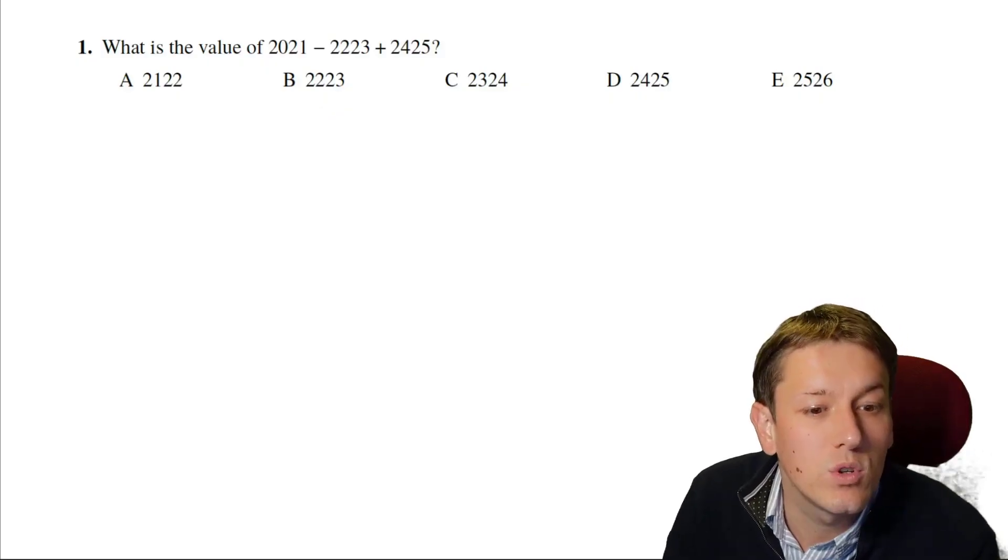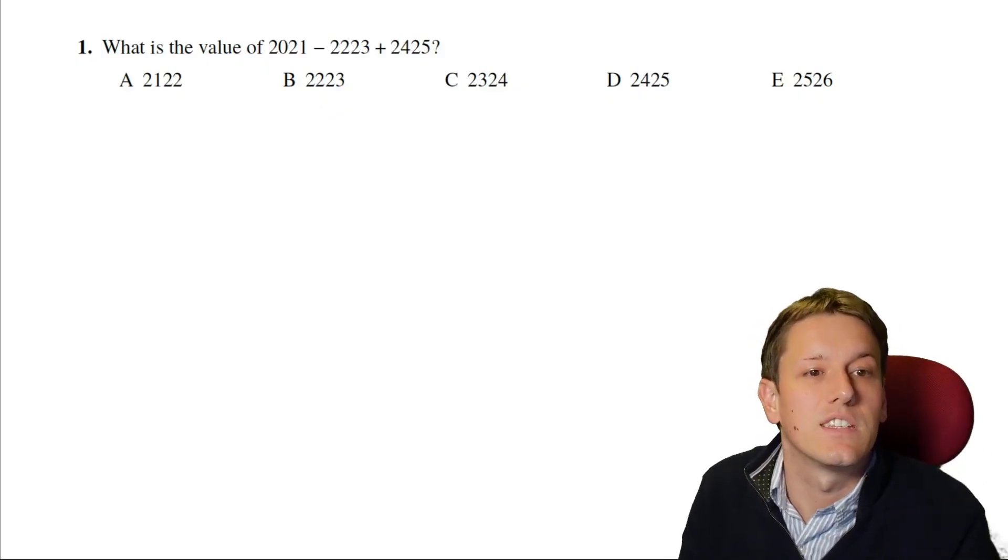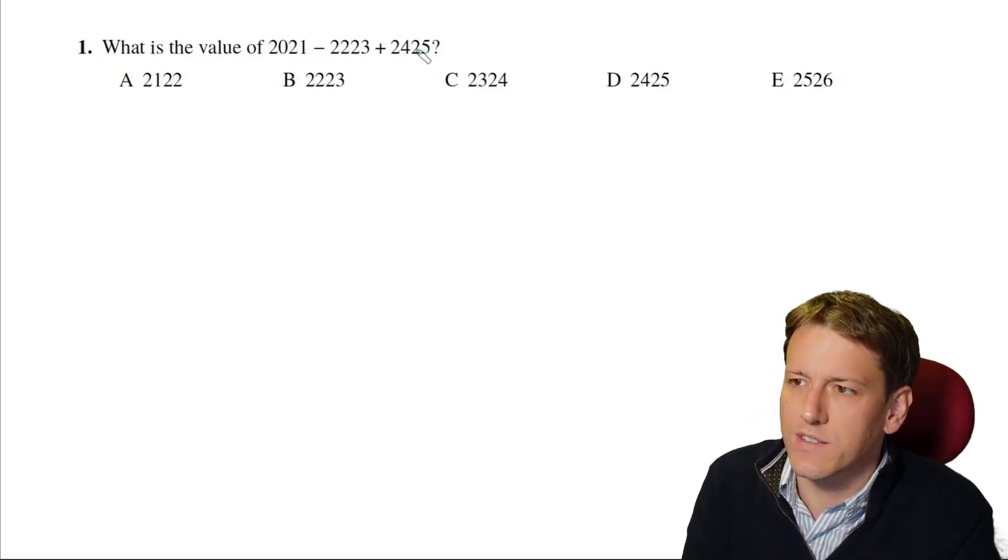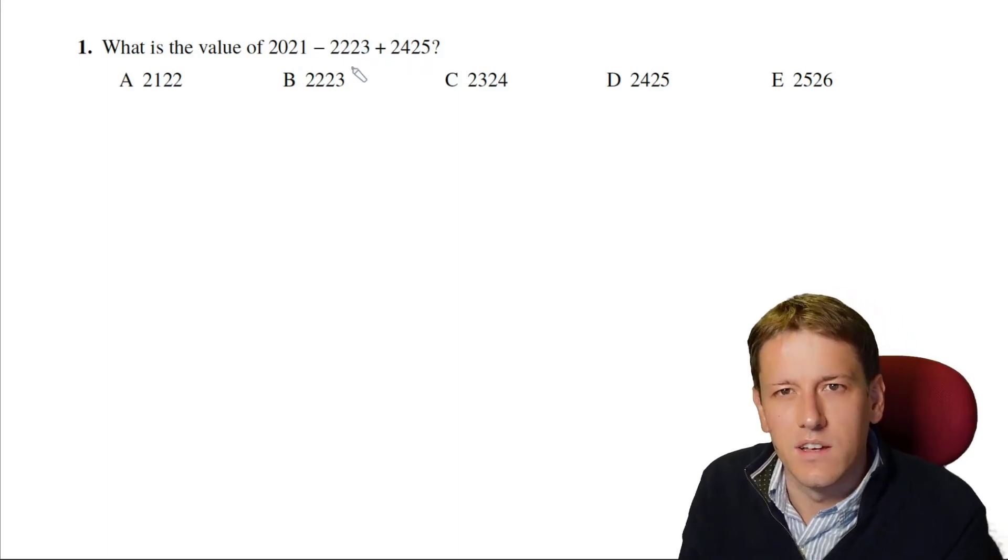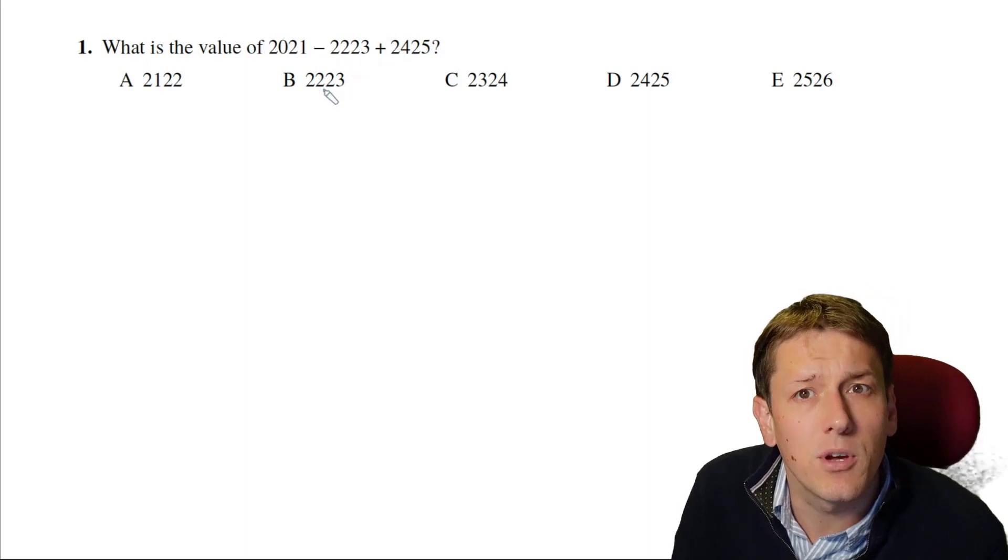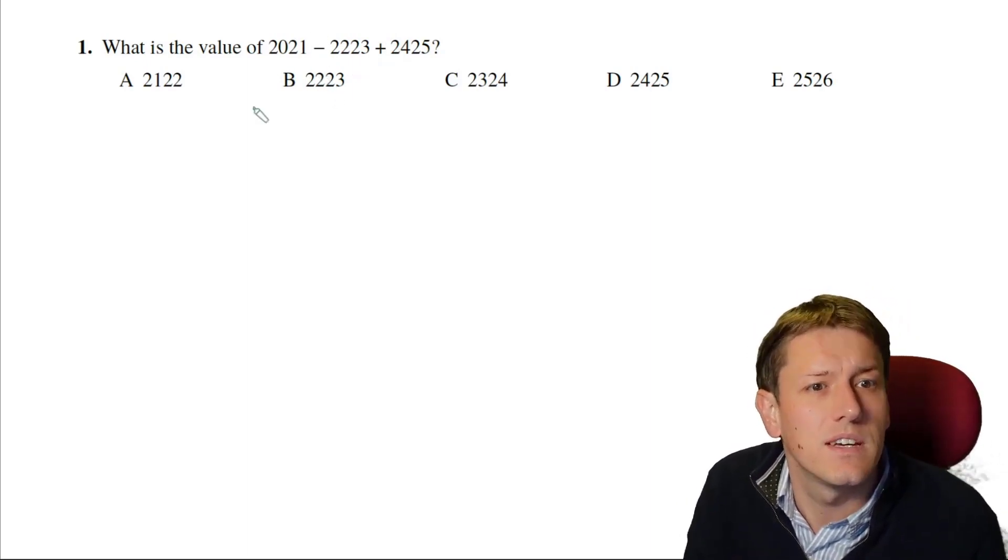In question one, you could just do the subtraction and the addition here, although you might want to change the order to add 2021 to 2425 first, and then subtract 2223 to avoid thinking about negative numbers. But you can also just do this by thinking about the last digits of the numbers here.